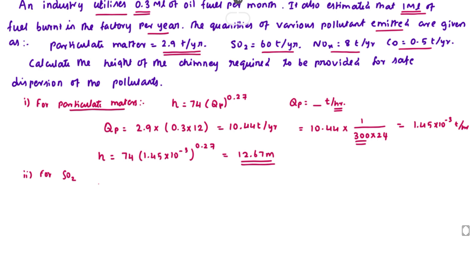Next thing is let us calculate for SO2. For SO2, the formula for height of chimney is equal to 14 into Qs power 1 by 3, where Qs is SO2 in kg per hour. SO2 emission is 60 ton per year per million liters of oil burn. We can take 60 ton, convert into kg, so 60 into 1000 divided by...